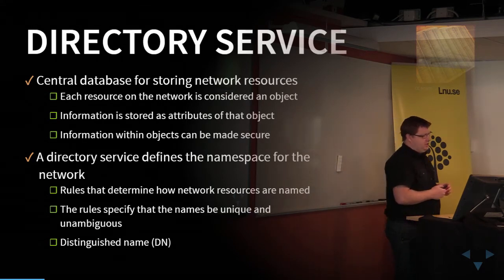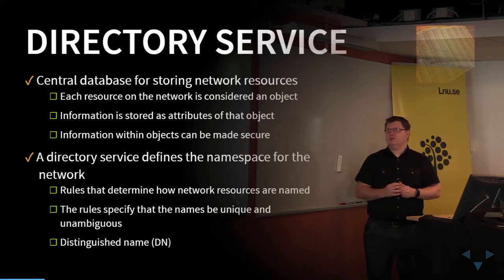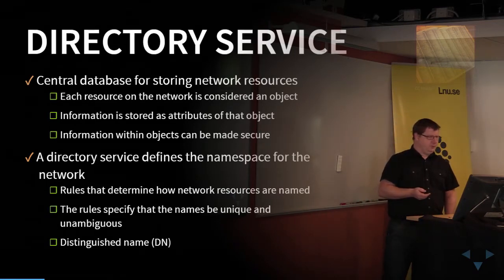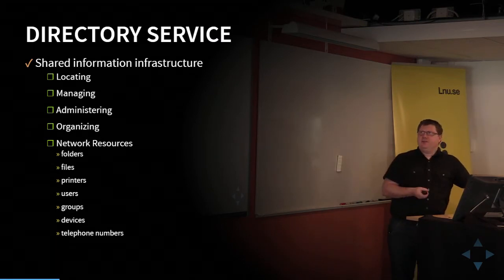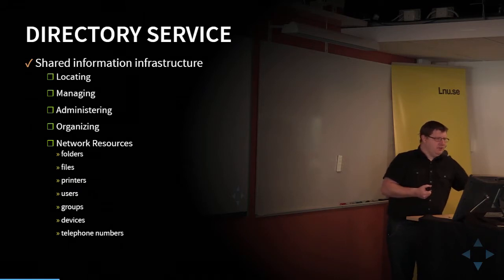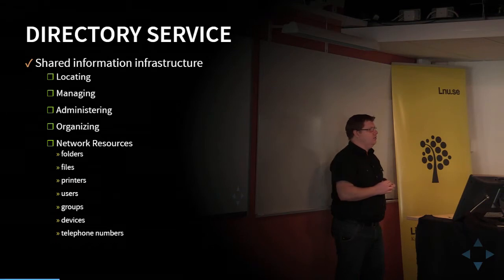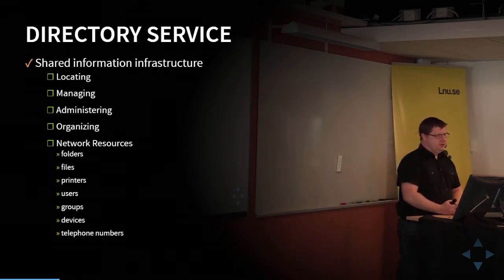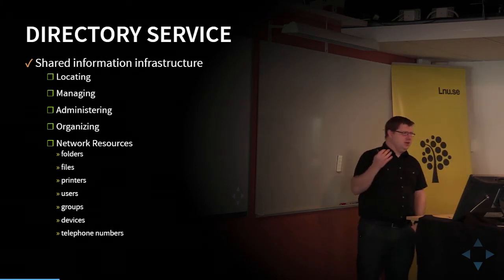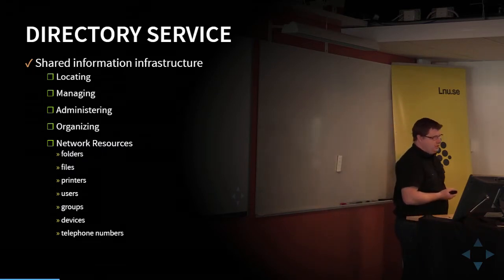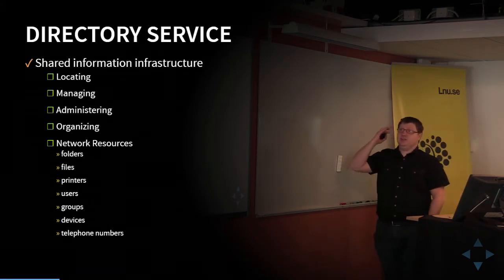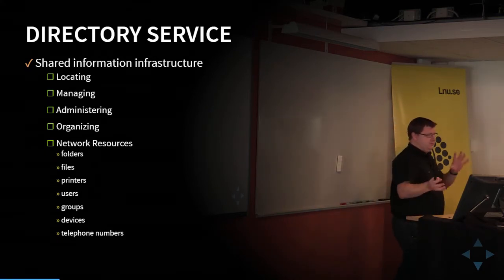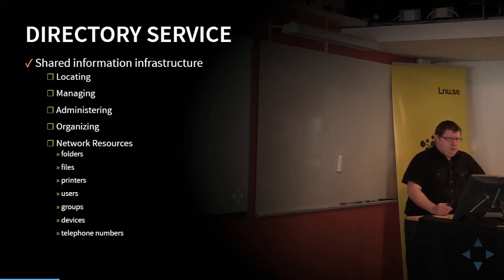This is usually called a distinguished name — the specific name for one object. We'll talk about it further on. The information included in a directory service can differ quite a lot, but we usually have shared information infrastructure to make it easier to locate different units or resources. It makes it more efficient to manage and administer objects, and organize them. Network resources can be files, folders, printers, users, groups, computers, servers — a lot of different things can be stored in this service.